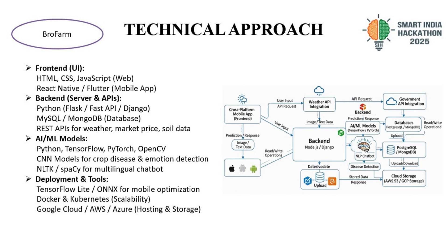REST APIs are used to fetch weather, soil data, and real-time market prices. AI and ML models are built using Python with TensorFlow, PyTorch, and OpenCV — CNN models for crop disease detection and sentiment analysis for farmer inputs. NLP models using NLTK provide multilingual chatbot assistance. Tools used include TensorFlow Lite for mobile model optimization, Docker for scalability and microservices management, and hosting on AWS and Google Cloud with cloud storage for secure uploads.